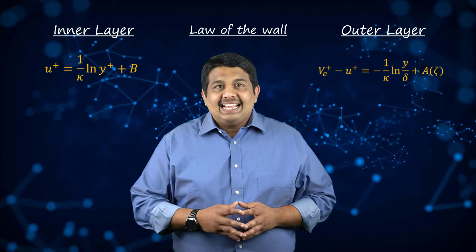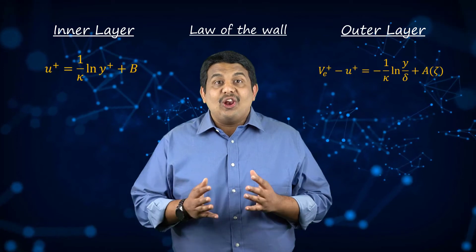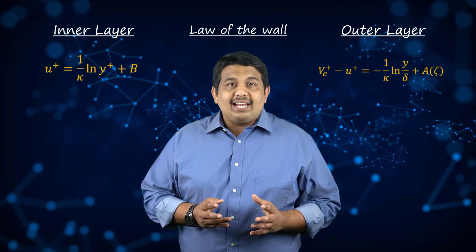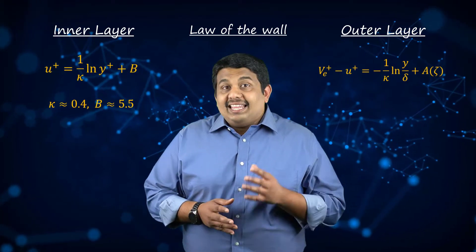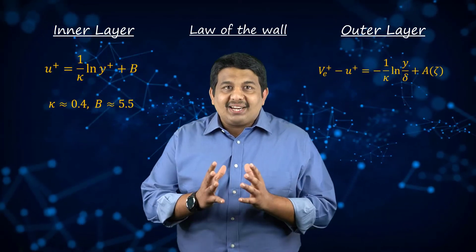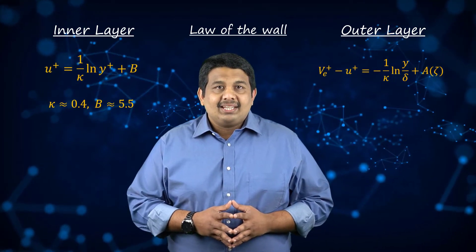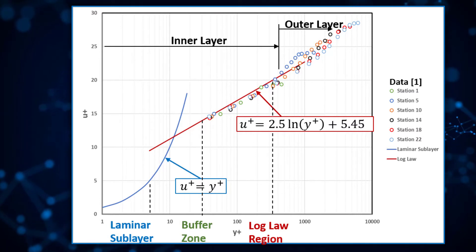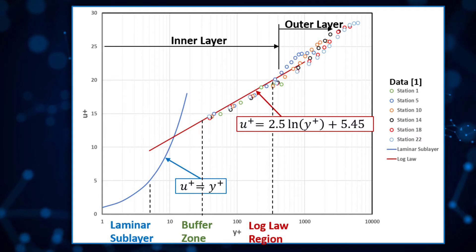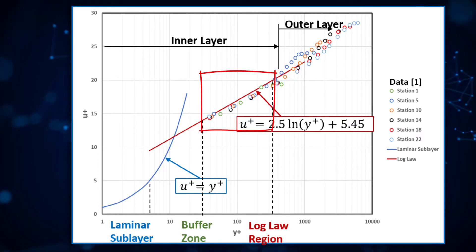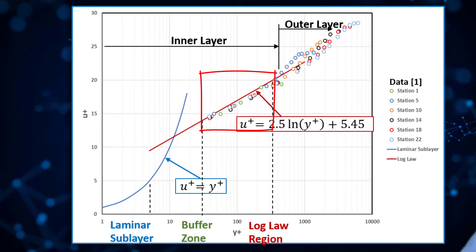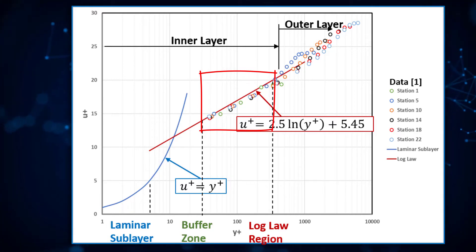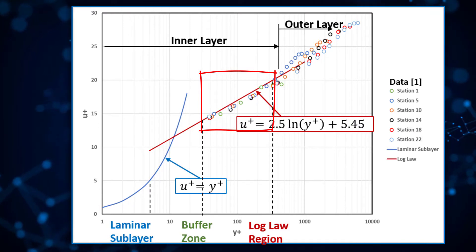Because of the logarithmic variation, the overlap region is also referred to as the log law region. In these equations, κ and B are universal constants, approximately 0.41 and 5 respectively. The value of the constant A is primarily defined by the mean flow pressure gradient among other variables. If we plot the relation for the inner layer with experimental data, we notice that in the range of Y+, the non-dimensional wall-normal distance, extending from 30 to 350, there is excellent correlation between the log profile and experiments. For atmospheric boundary layer flows, the log law region can extend to the order of thousands of Y+.